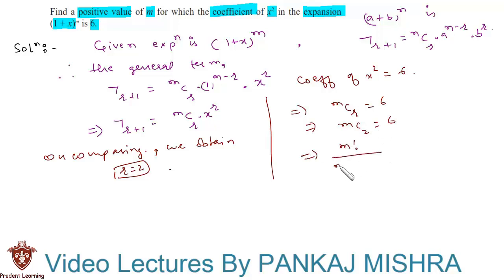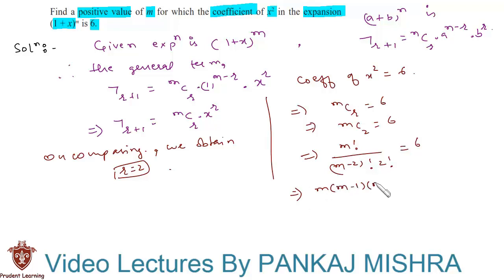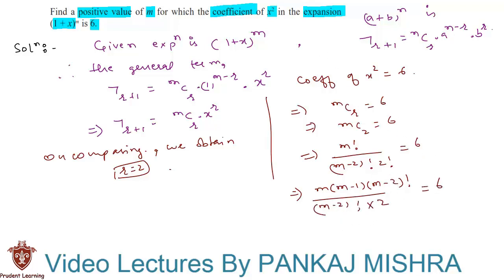So mC2 = m! / ((m-2)! × 2!) = 6. This implies that m! can be written as m × (m-1) × (m-2)! over (m-2)! × 2, which equals 6. Here we can cancel (m-2)! and we are left with m(m-1) = 12.